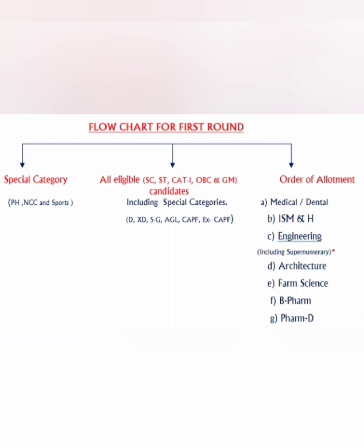The first preference in allotment is medical and dental. ISMH — Indian System of Medicines and Homeopathy — is the second. Third preference is engineering, fourth is architecture, fifth is pharma science, sixth is B Pharma, and seventh is Pharma D. This order exists because many students apply for more than one type of course.